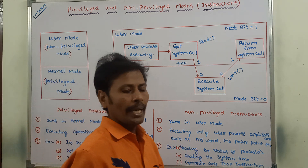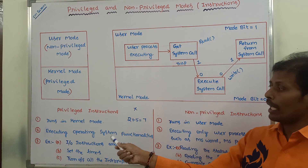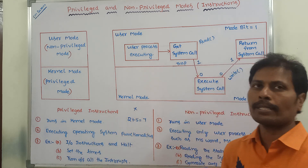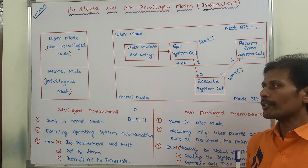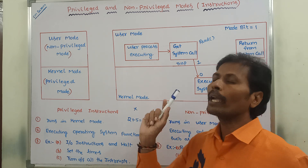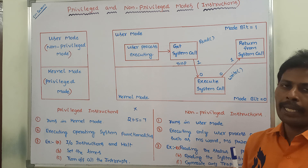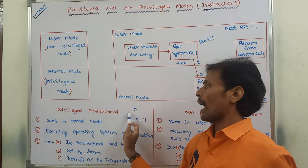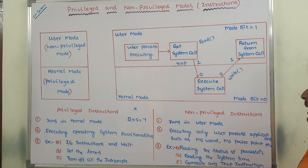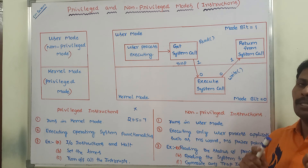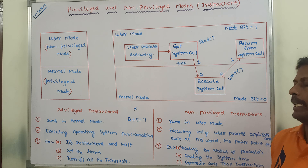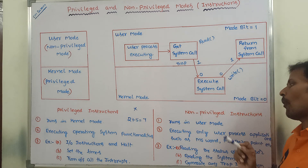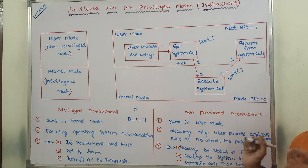These are the three applications of privileged and non-privileged instructions. Now, the differences: privileged instructions are nothing but the instructions that are executed only in the kernel mode. Whatever instructions are executed in the kernel mode, those instructions are called privileged instructions. Whereas non-privileged instructions are the instructions that are executed in the user mode.